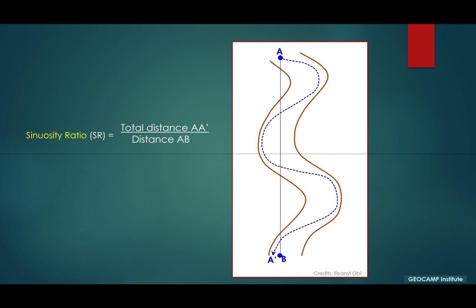There is an element called the sinuosity ratio, or sinuosity index, which is one of the elements used in classifying fluvial systems or rivers. The sinuosity ratio is the ratio between the distance along the channel pathway — the whole length of the river — divided by the shortest distance from the point of entry to the point of exit. So the total path length along the river divided by the straight-line distance A to B gives you the sinuosity ratio.